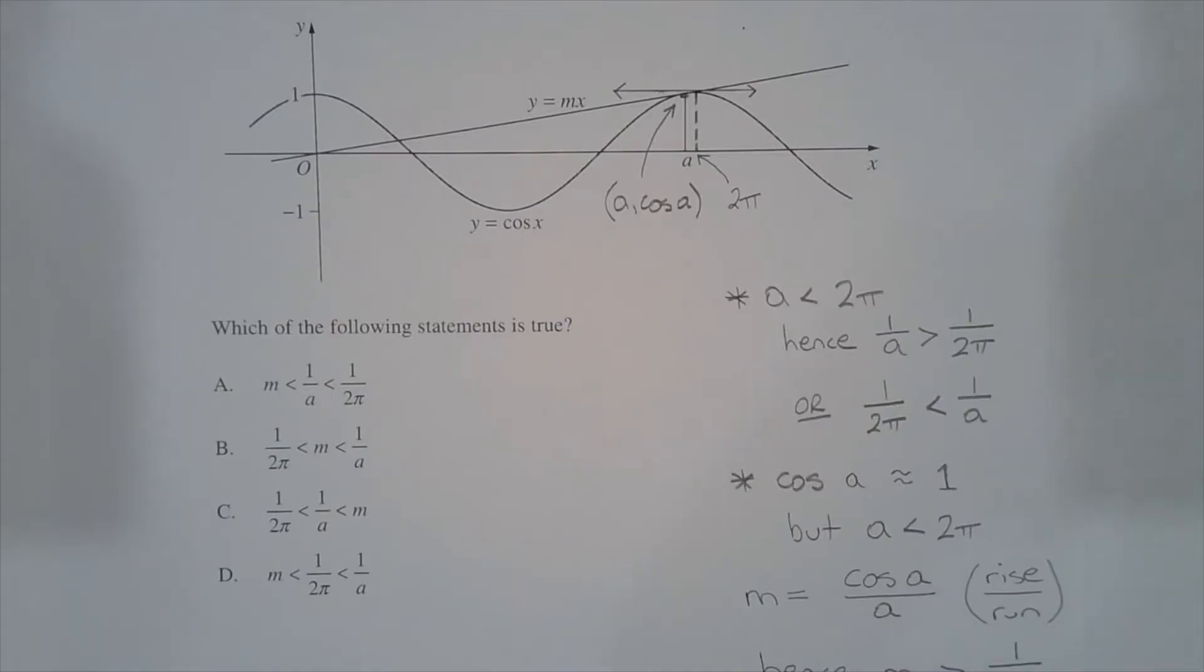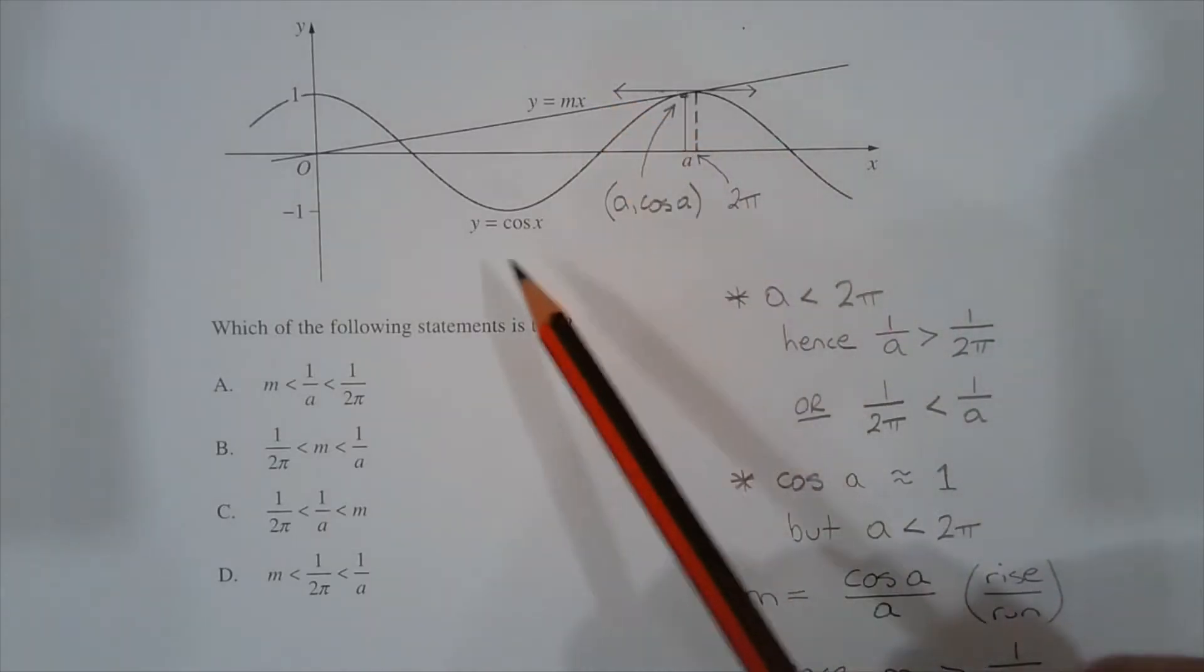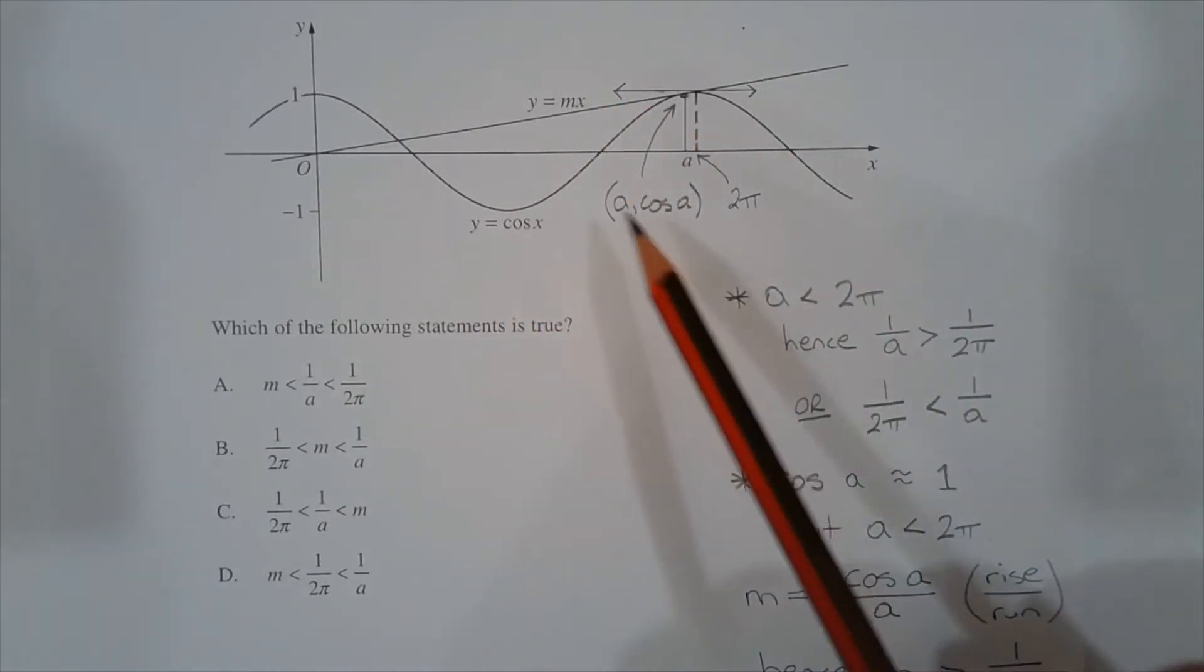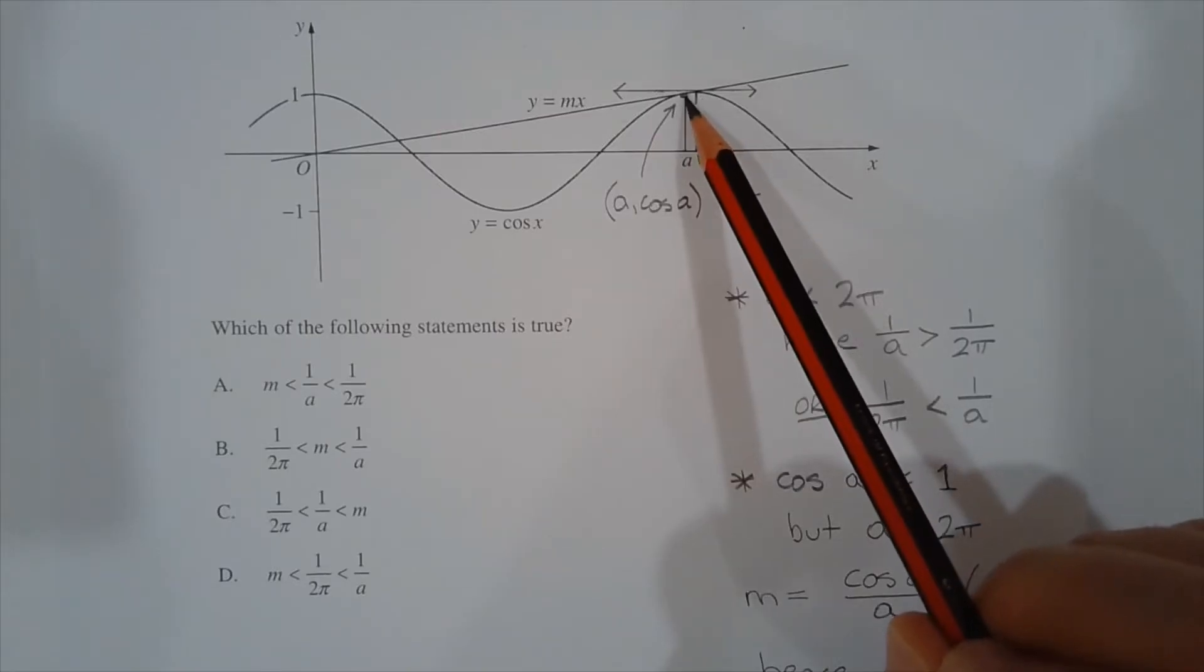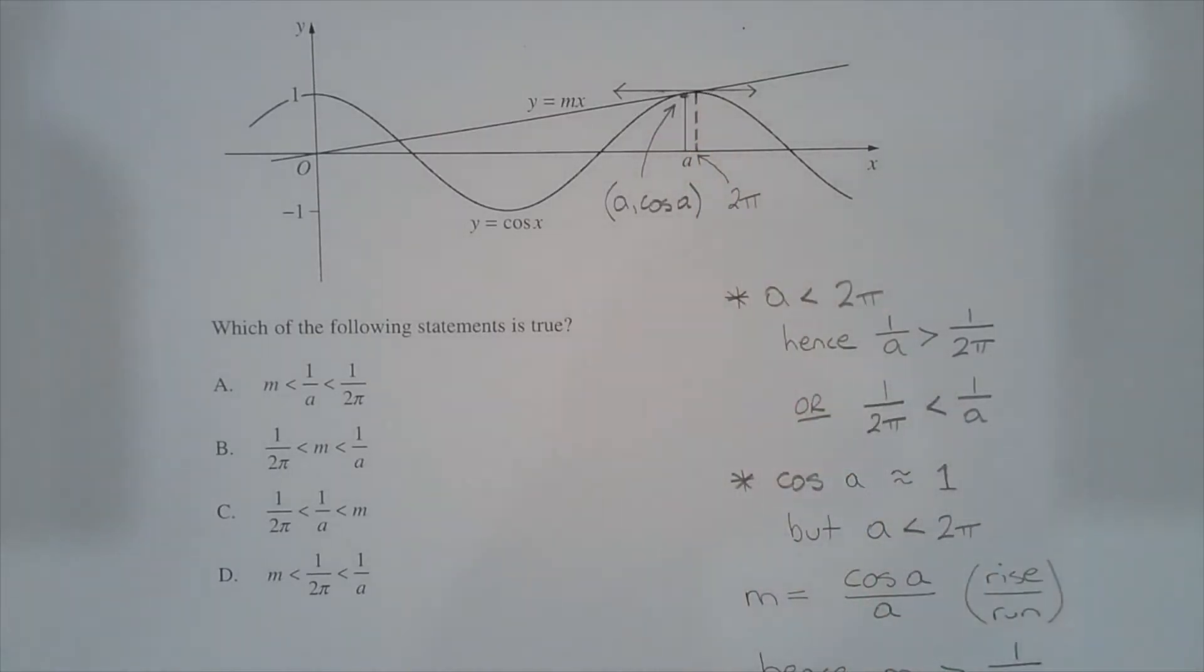The coordinates of the point of contact of the tangent y equals mx and the curve y equals cos of x is a comma cos of a. That's this point here. Notice that this point occurs before the stationary point where x equals 2π. Hence, a is less than 2π.